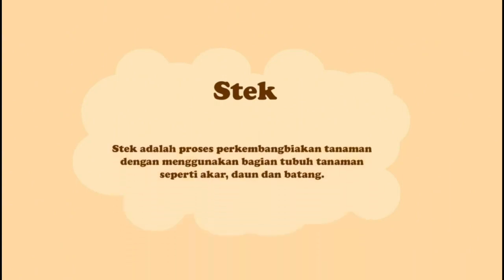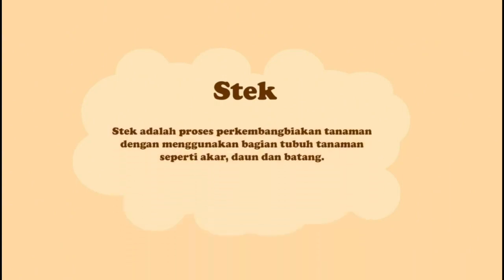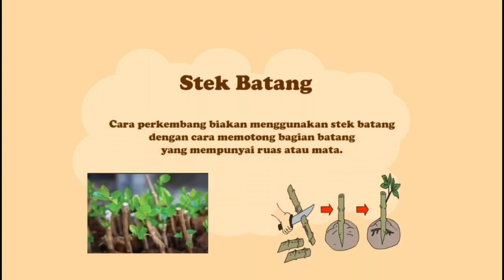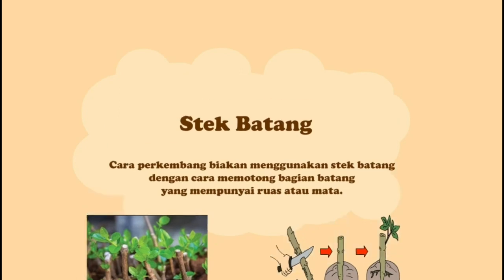Keempat, stek. Stek adalah proses perkembangbiakan tanaman dengan menggunakan bagian tubuh tanaman seperti akar, daun, dan batang. Tumbuhan bersifat totipoten, yaitu kemampuan memotong untuk membentuk sel lain yang lengkap dan menyerupai orang tuanya. Cara stek dapat dilakukan dengan tiga cara: yang pertama, stek batang. Cara ini paling mudah dipahami dan memiliki tingkat keberhasilan yang sangat tinggi, yaitu dengan memotong bagian batang yang mempunyai ruas atau mata.